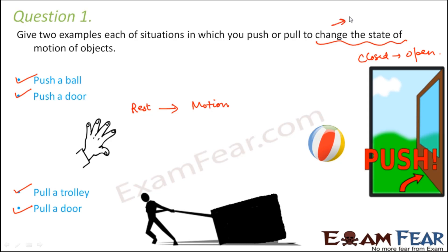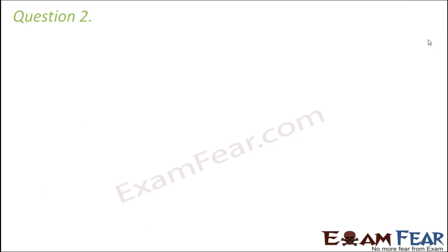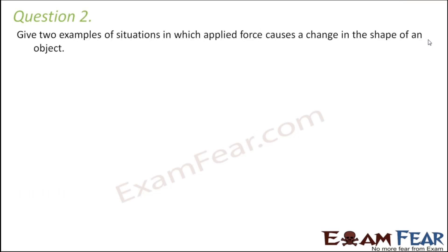When I say 'change the state of motion,' it could mean making a body move from being at rest, or stopping a moving body, or increasing the speed of a moving body, or decreasing the speed of a moving body, or changing the direction of motion — for example, a body moving towards the right and you apply force to make it move towards the left. These are the various ways by which the state of motion of an object can be changed.